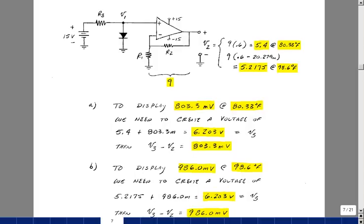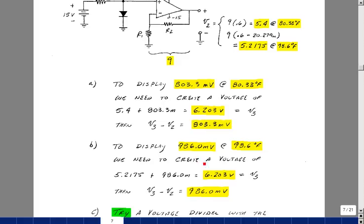What do I need at an elevated temperature? Or really any other temperature. Well, if I needed 986 millivolts, again, corresponding to 98.6, I would add to this voltage here 986 millivolts, so I get 6.203, and again, when I take this voltage and subtract the output of the op-amp, which has the diode connected to it, I get the correct reading on the multimeter.